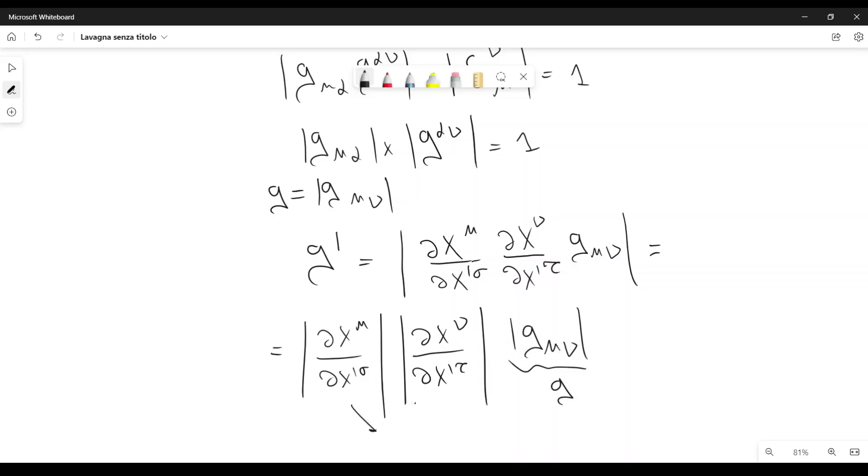And these two determinants here are equal because they are actually the same determinant, the determinant of the same matrix. This is like a Jacobian, if you want. Each one of them is a Jacobian, because we are taking derivatives with respect to the new coordinates of the old coordinates. This can also be written as the determinant of D X mu over D X prime sigma squared times G.